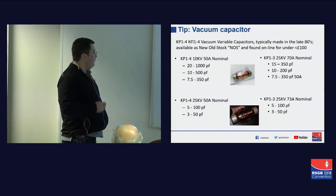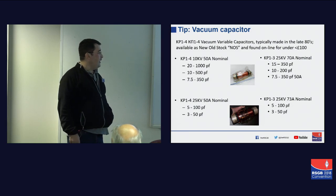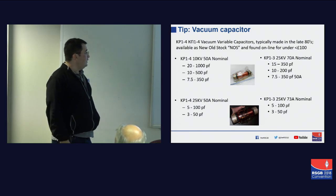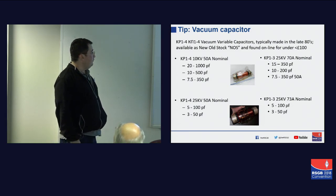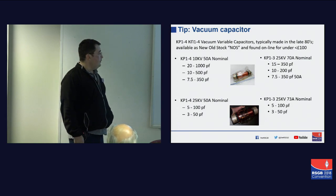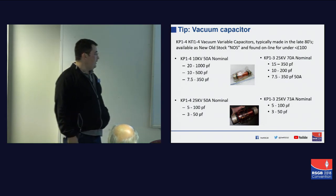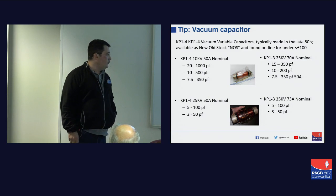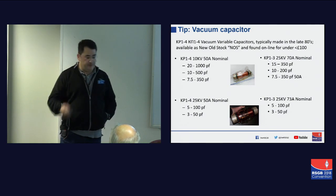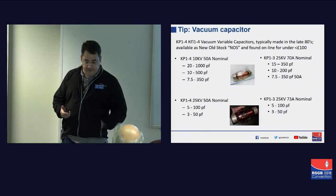In terms of tips for capacitors, the ubiquitous online flea-market auction site will have these available. I would recommend the KP1-4s — they generally sell for under 100 pounds. If you're looking at the KP1-4 7.5 to 350 pF or 10 to 500 pF, the 5 to 100 pF is about 50 quid on eBay. Your mileage might vary.